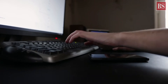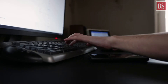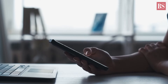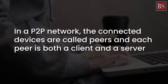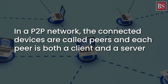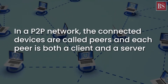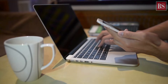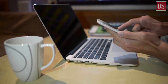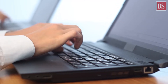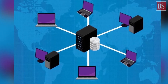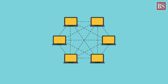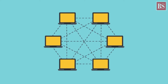Therefore, each device in a P2P network is equal to the others with no additional privileges, and there is no primary device in the network. In this networking type, the connected devices are called peers, and each peer is both a client and a server. Therefore, each device on the network can download and upload data simultaneously and does not require a central unit to enable data transfer, because every resource available in a P2P network is shared among connected devices.